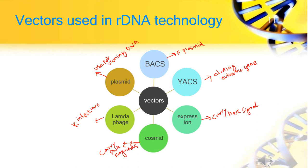The next vector is the lambda phage vector. Lambda phage vectors are recombinant constructs containing the phage chromosomes in addition to embedded foreign DNA. The next one is the expression vector. Expression vectors carry host signals that facilitate the transcription and translation of an inserted gene. They are very useful for expressing eukaryotic genes in bacteria.